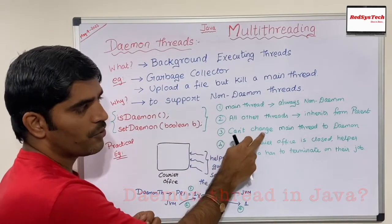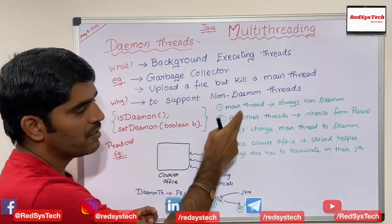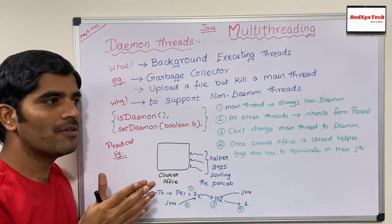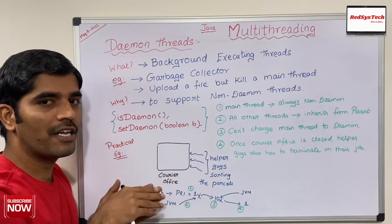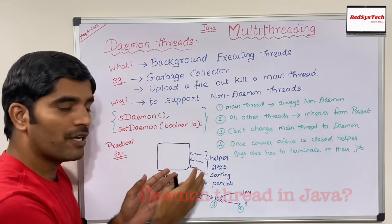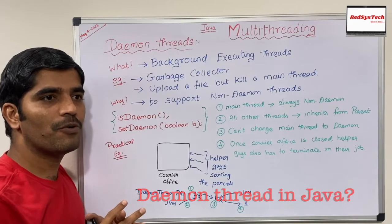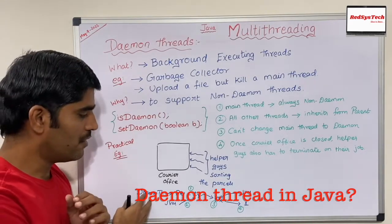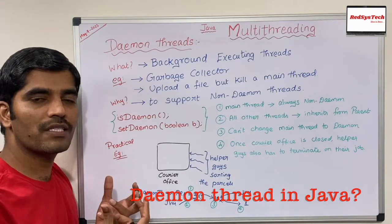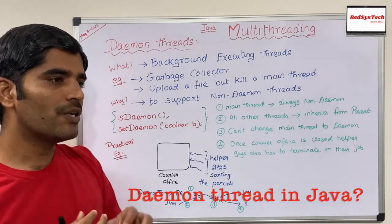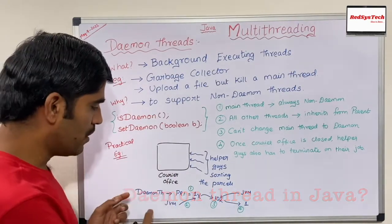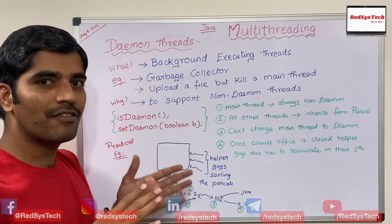You can't change the main thread to daemon because the main thread is always started by the JVM, so you have no opportunity to set anything before it starts — that is why it cannot be done. Going back to the courier office analogy: if there is some urgency — someone asking about a particular parcel — the office manager asks the helper guys to specifically look for that parcel and get it done quickly. That is exactly how the JVM operates with daemon threads when needed.